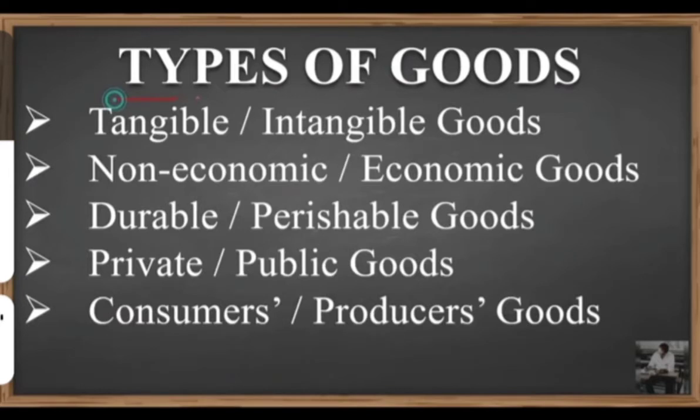Examples of tangible goods include car, home, television, refrigerator, mobile phones, etc. These are called physical or tangible goods which can be measured, seen, touched, and exchanged. Now intangible goods are the opposite of tangible goods. The goods which are invisible, do not have physical existence, cannot be measured, are untouchable, and exchange is not possible are termed intangible goods.